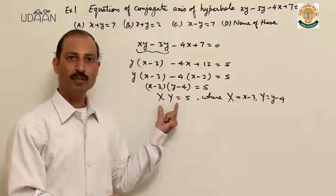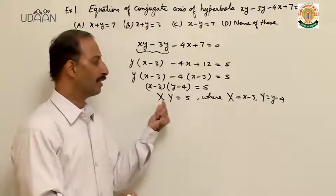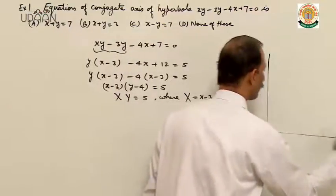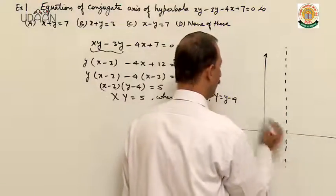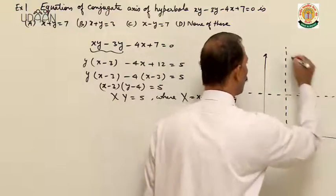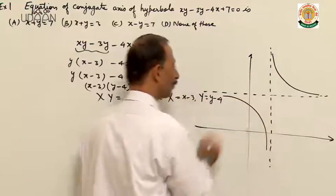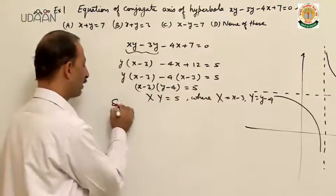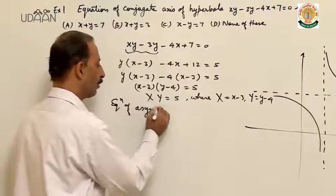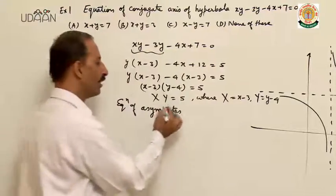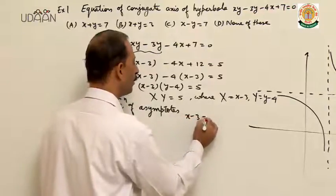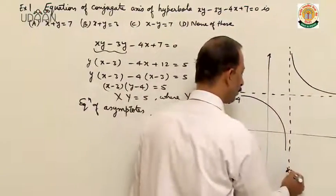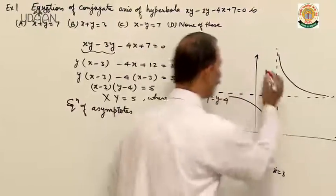In the rectangular hyperbola, asymptotes are perpendicular to each other and the axes are also perpendicular. So XY equal to 5. If I draw the rough diagram, this is the line x equal to 3 and this is the line y equal to 4. This type hyperbola you will get: x minus 3 into y minus 4 equal to 5. The equations of asymptotes here are x equal to 3 and y equal to 4 — these are the two lines of asymptotes.